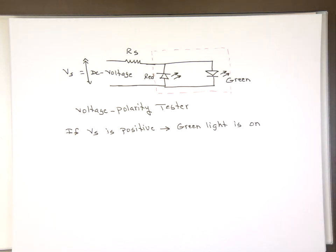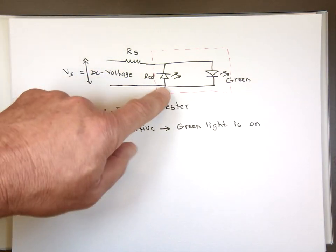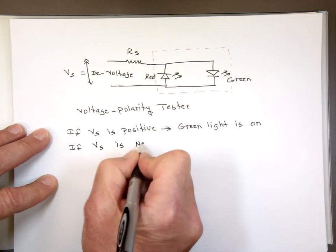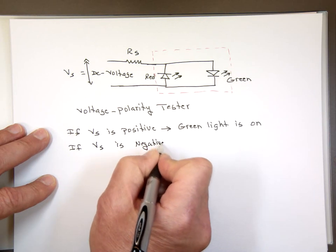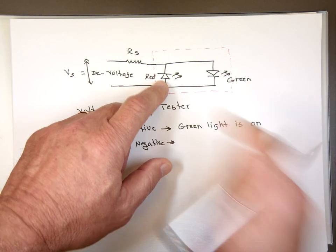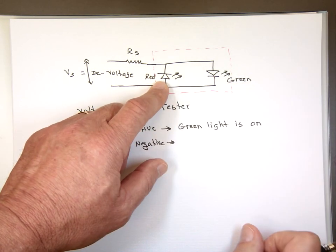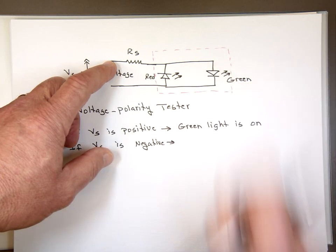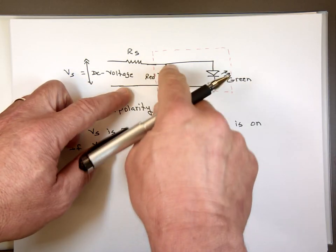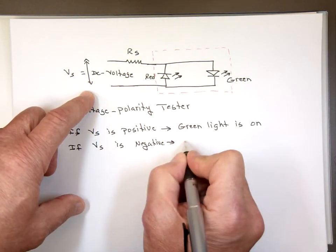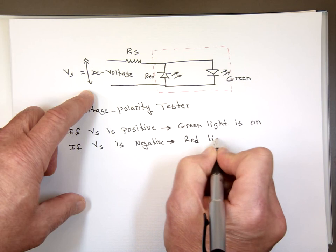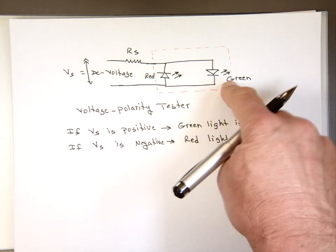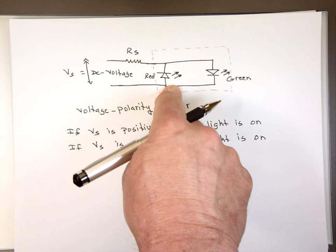And what happens if VS is negative? That means this end is higher than that. If VS is negative, this actually will be in reverse bias. Remember, these don't work in breakdown mode. Only the Zener diodes. So this is in reverse bias. Nothing is going to go through it. If it's negative, this one is reverse. And this one is going to be actually in forward mode. Which means current will go through it. And the red light is on. So when VS is positive, you will see the green light on. When VS is negative, you will see the red light on. That's all it does.